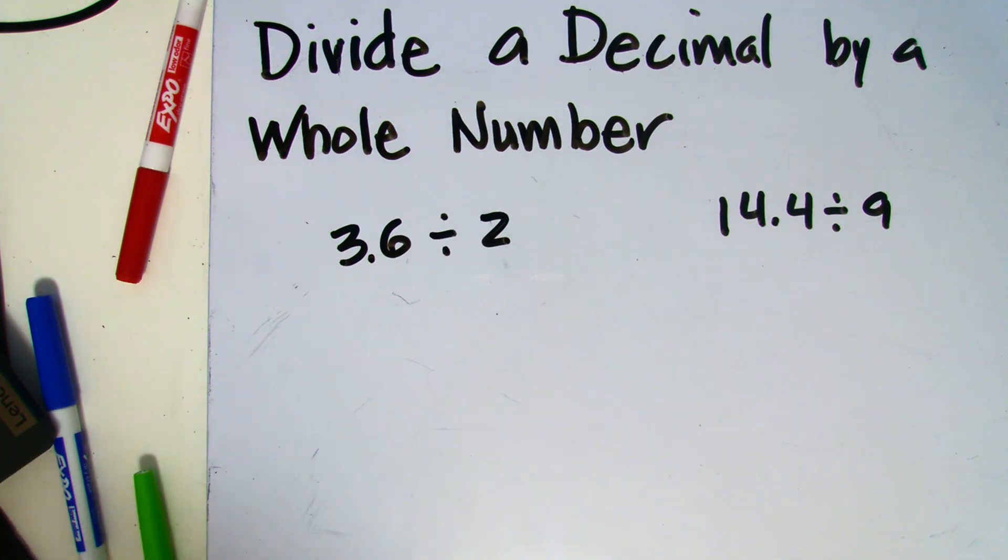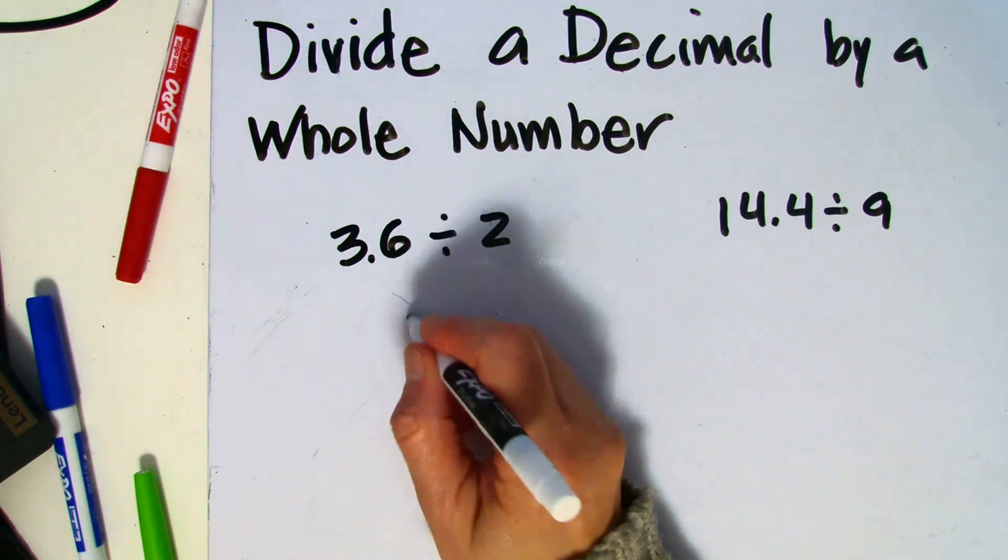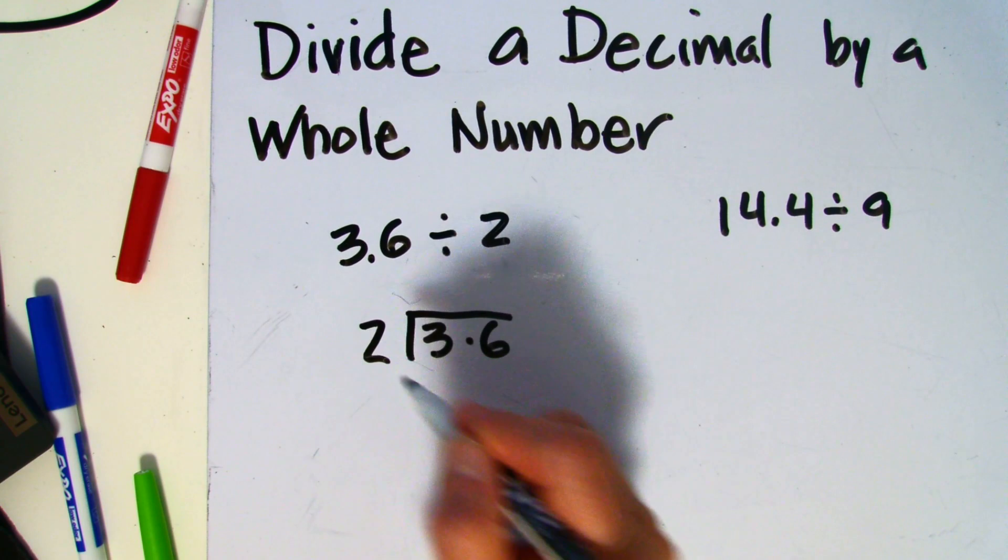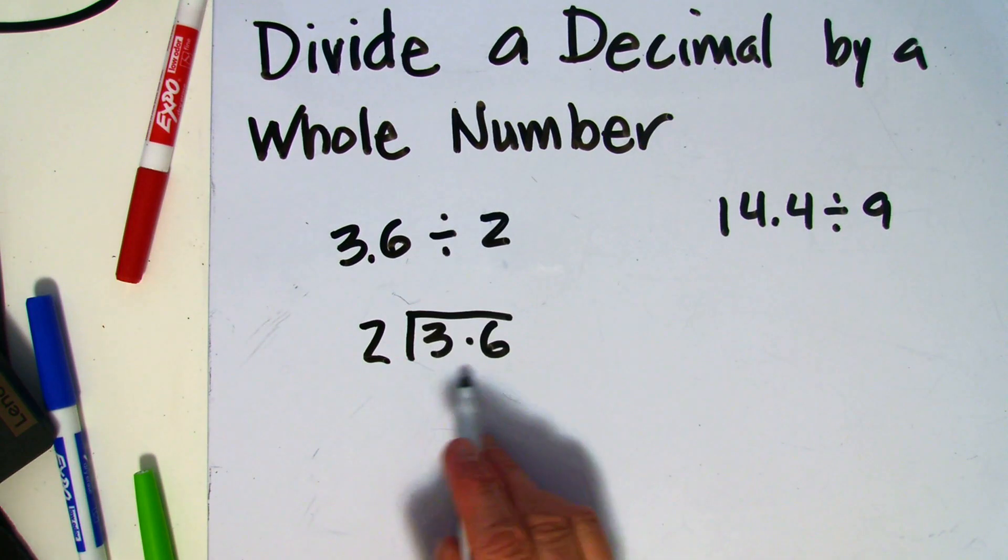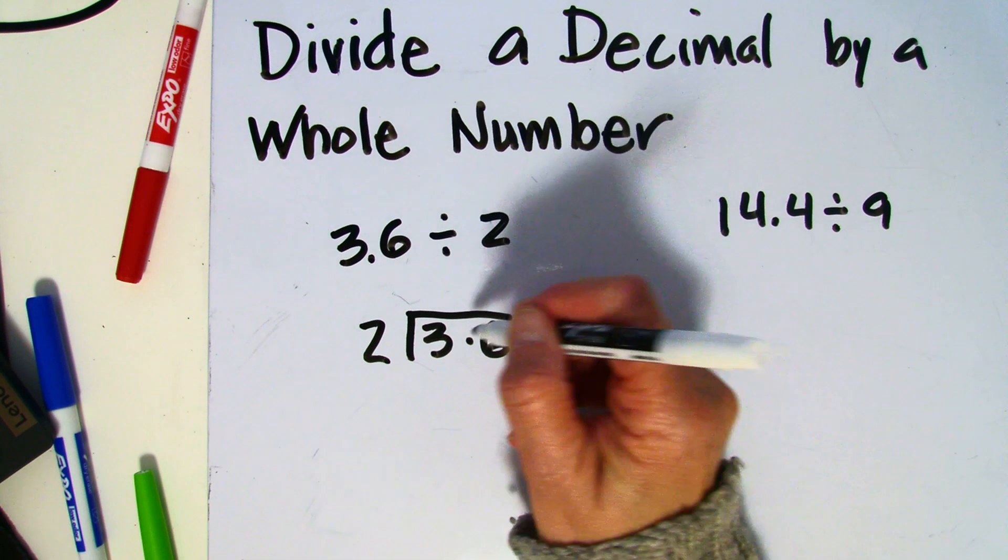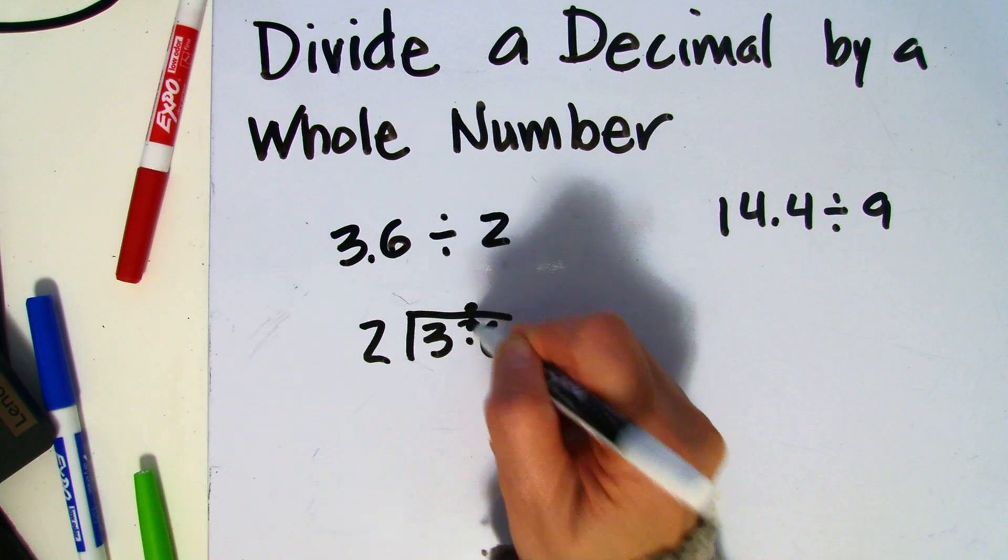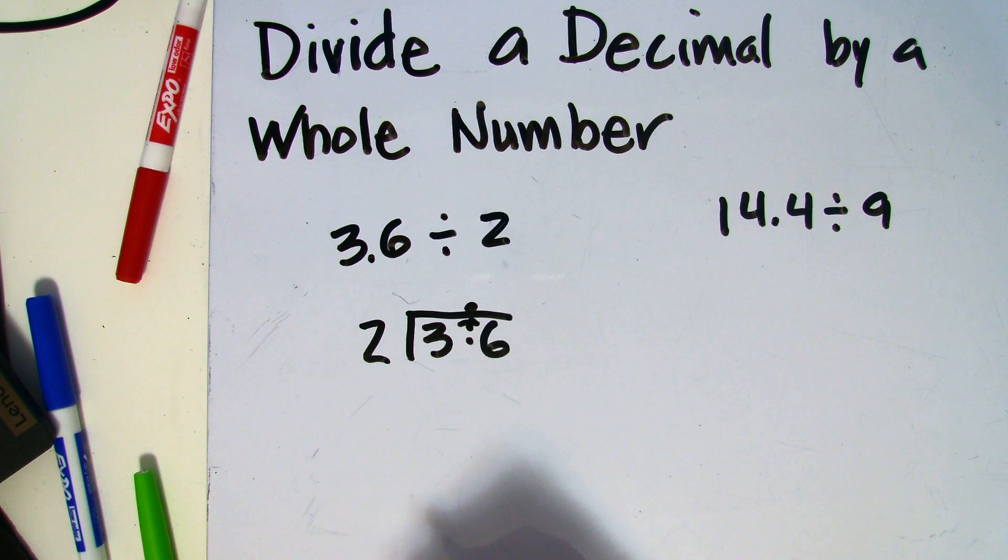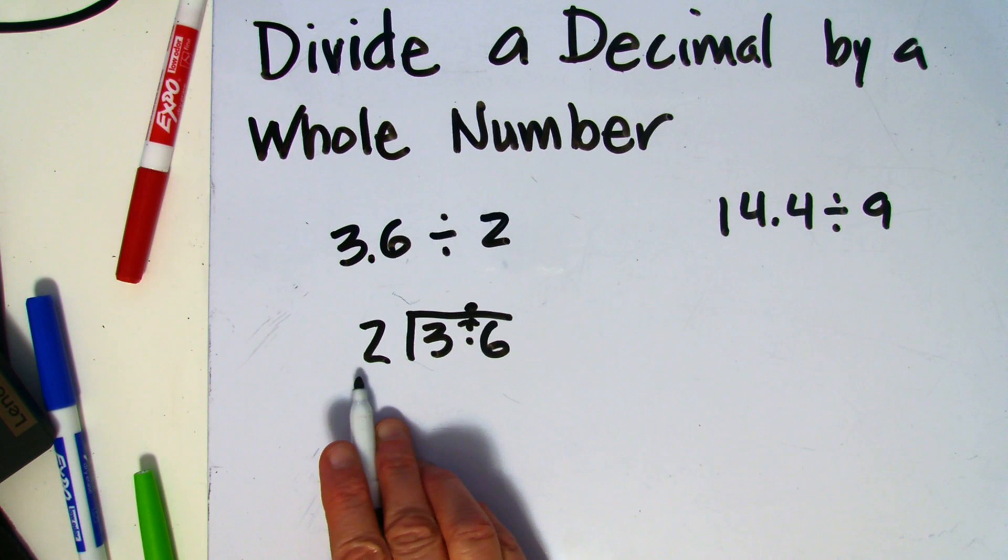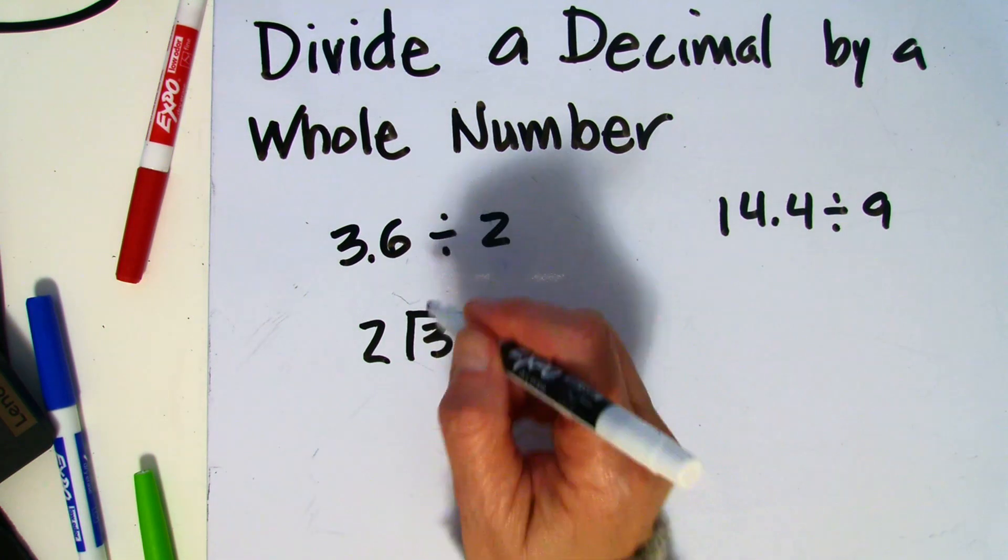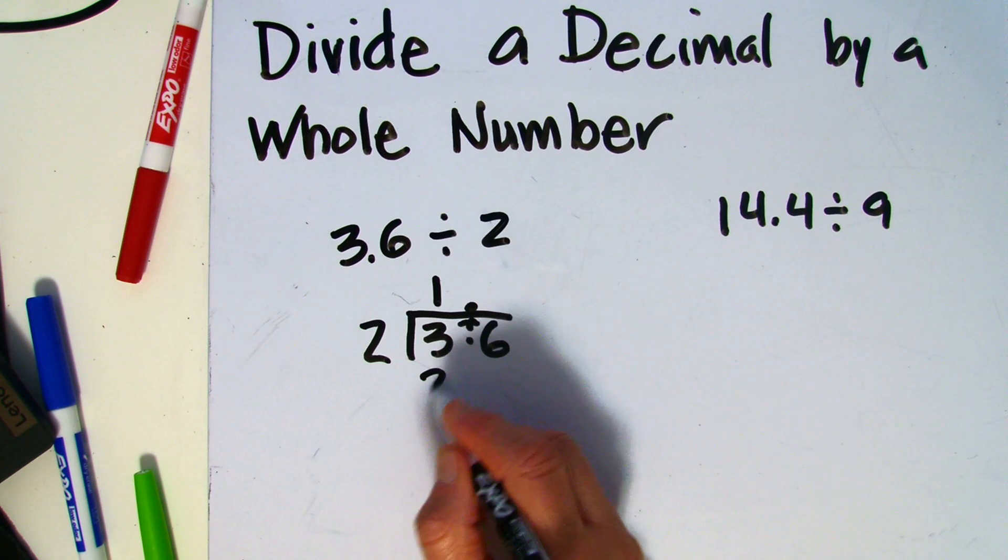We're going to set it up as a division problem like we would with whole numbers. The dividend goes under the division sign, and the divisor is on the outside. Now, when the dividend has a decimal point, we're going to bring it up to the quotient so that it's visible when we calculate the quotient. Now I'm going to ignore it. Then I'll divide the 2 into what looks like 36. 2 does go into 3 one time. 1 times 2 is 2.